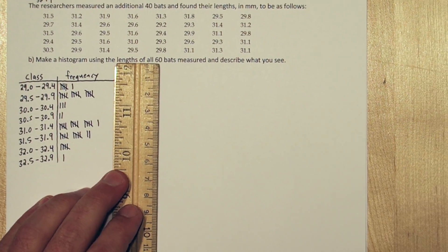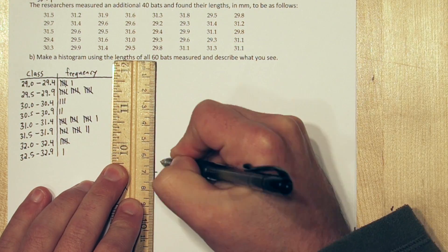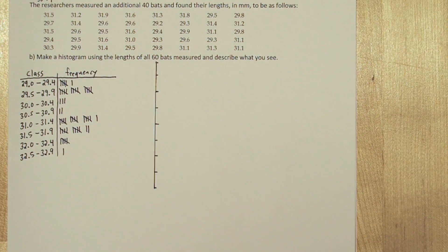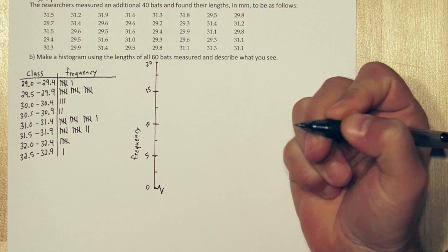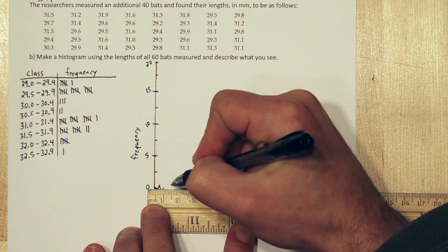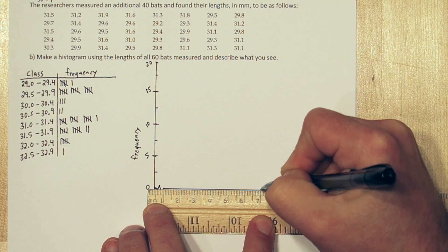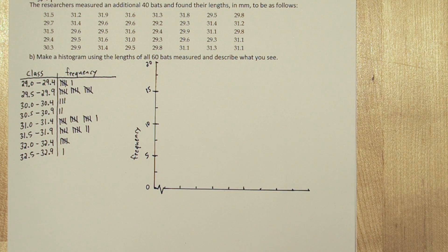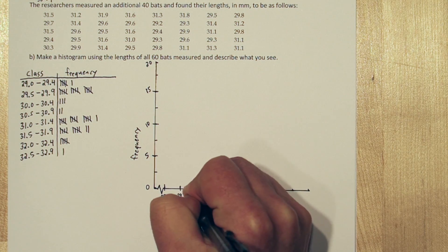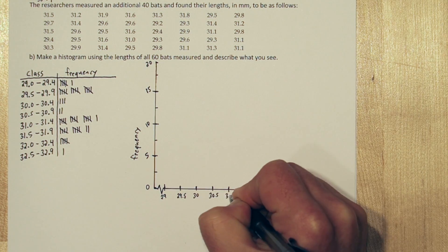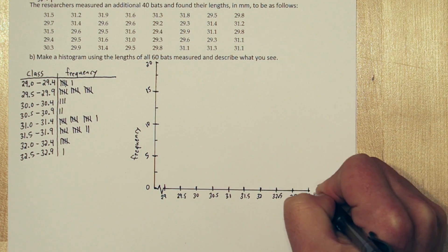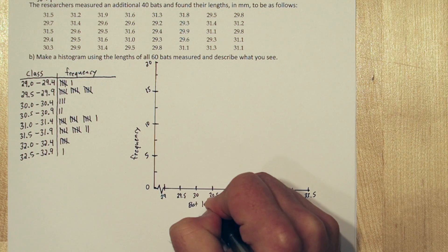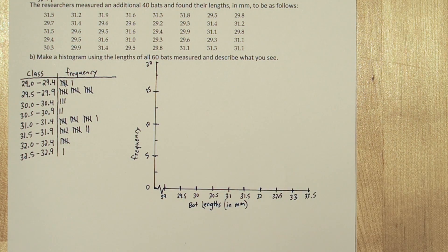So now that we've tallied up all the frequencies, we're ready to set up our histogram. So our highest frequency was 16, so we need to make sure our vertical axis goes all the way up to at least 16. And for our horizontal axis, we need to go from 29 all the way up to 33. The other thing about our horizontal axis is it wouldn't make sense to start at zero, since our minimum bat length was 29.2. But we don't want to be deceptive, so we're going to add a little break, this little squiggly thing in the horizontal axis.